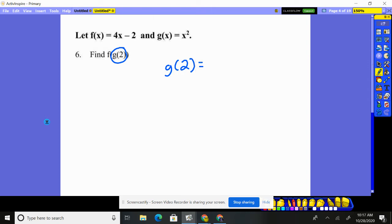g of two is, well, I'll go to the g function. It says take what they give you, which is two, and square it. So this is four.